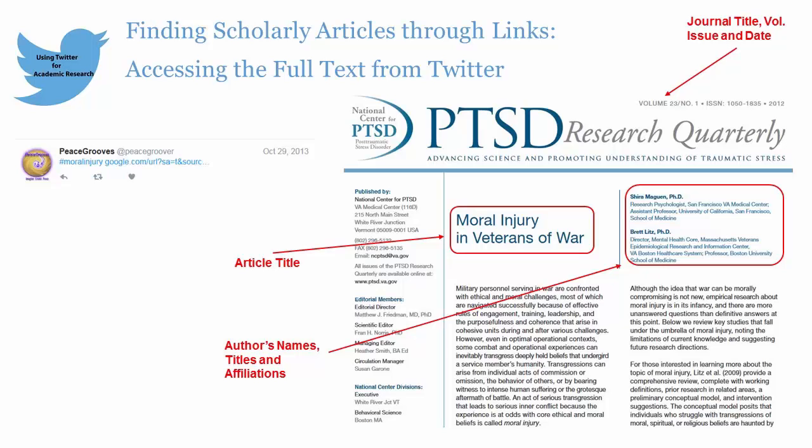You see the journal title, volume, issue number, and year of publication. The article title and author's names are also clearly stated, and you obtain valuable information about these authors with their titles and affiliations. Now that you know that these scholars have written about moral injury, you can search for their names in our scholarly databases.